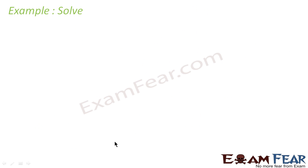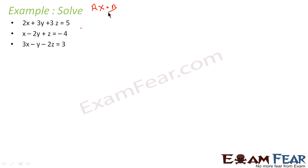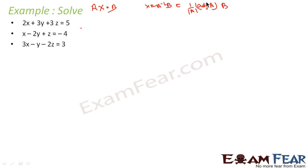Let's take one more example — similar approach but here we have three equations and three variables. We have to convert this equation into matrix form AX = B, then check whether A is singular or not. If A is non-singular, the system is consistent, and we can write x = A inverse B, where A inverse is nothing but 1 by determinant of A into adjoint of A, into B.